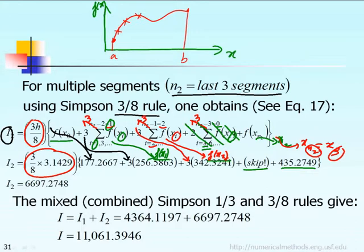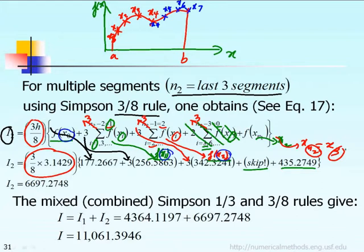For the first part, x0 through x4, we use Simpson one-third rule. After that, we use x4 again, then x5, x6, and x7 for Simpson 3/8 rule. So in the formula, the so-called x0, x1, x2, and x3 should correspond to x4, x5, x6, and x7, because the first x0 through x4 are already used by Simpson one-third rule. Therefore, f(x0) in the 3/8 formula actually means f at x4.